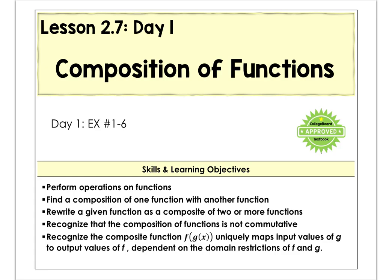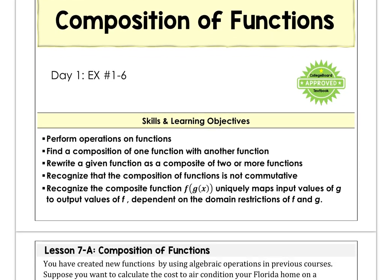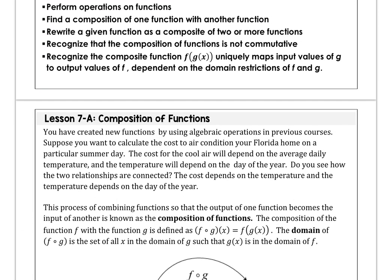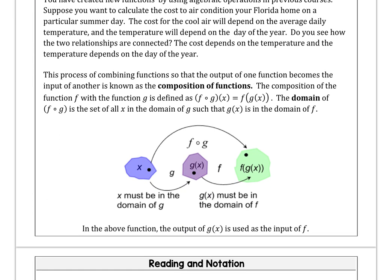Hey there AP PreCalc. This is Ms. Adams from Flamingo Math. Today we're looking at Lesson 7 in Unit 2. We're going to talk about compositions of functions — the process of combining functions so that the output of one function becomes the input of another function. This is known as the composition of functions.